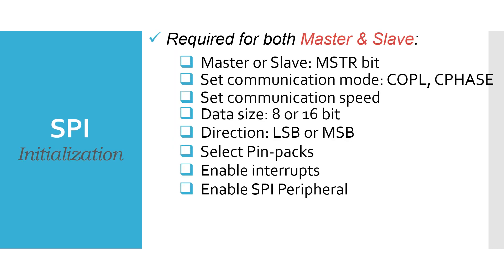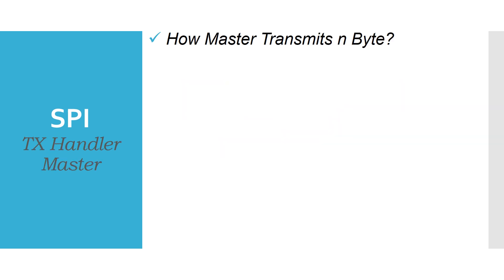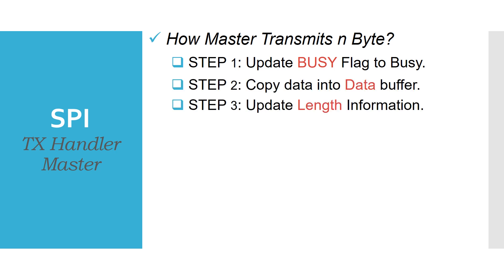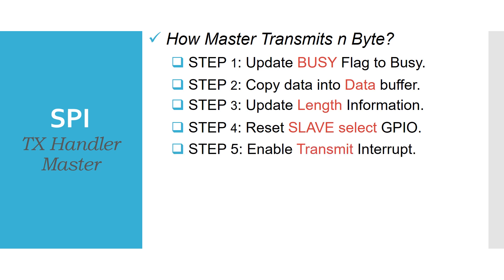For the Init API: first, it should configure the device as master or slave by setting the MSTR bit in CR1. Then it should configure the communication mode by setting the CPOL and CPHASE bits and the speed of communication. Next comes the data size and direction bit — the direction bit determines which data format is used, LSB or MSB. Finally, it sets up the interrupts and enables the SPI peripheral. For the transmit handler, the master first updates its busy flag, copies the data and length information to the global buffer, resets the GPIO to select a particular slave, and then enables the transmit interrupt.